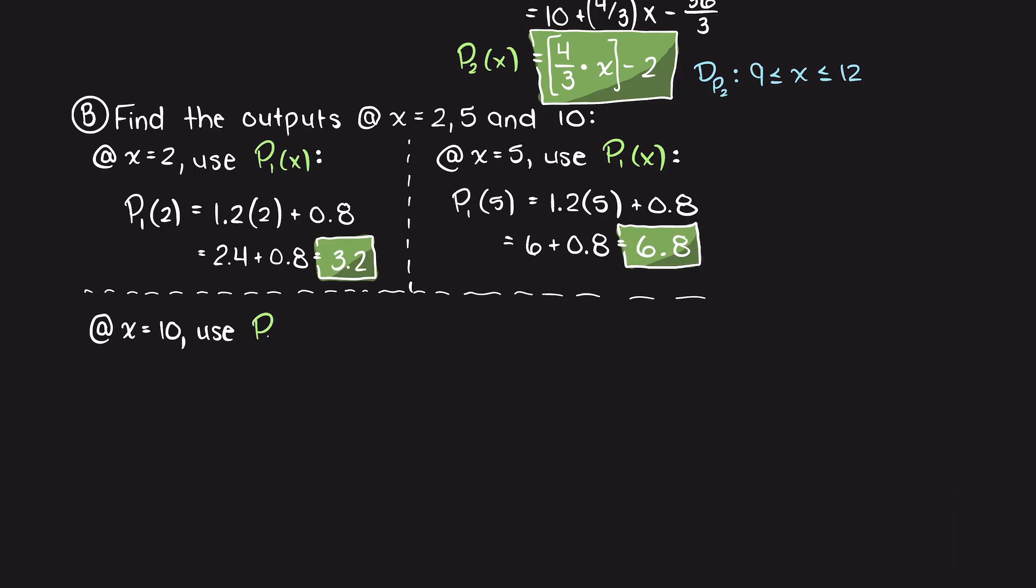Lastly, we have x equals 10, and this falls in the domain of our second interpolating polynomial function, p2. Applying an input of 10, we get an output of 11.33.